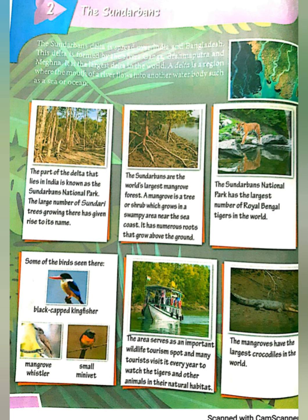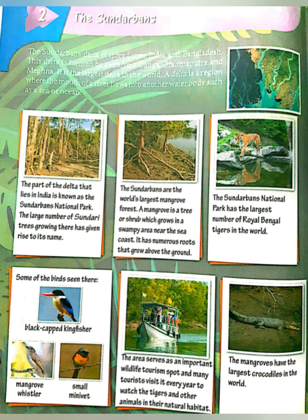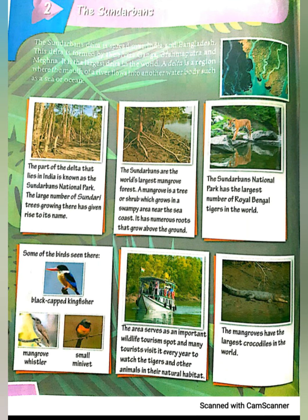Lesson 2: The Sundarbans. The part of the delta that lies in India is known as the Sundarbans National Park. The large number of Sundari trees growing there has given rise to its name. The Sundarbans are the world's largest mangrove forest. A mangrove is a tree or shrub which grows in a swampy area near the sea coast. It has numerous roots that grow above the ground.